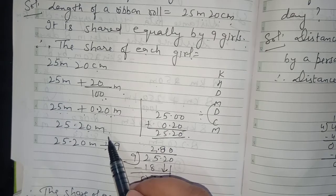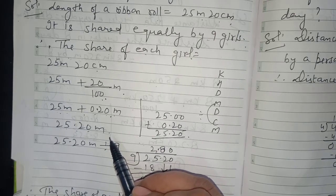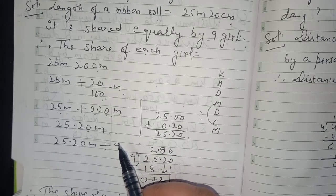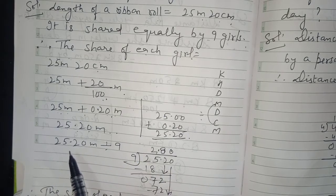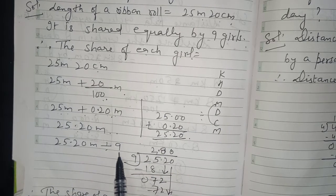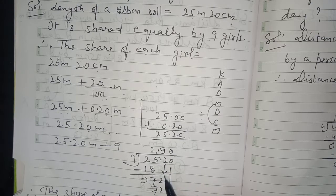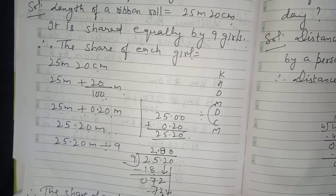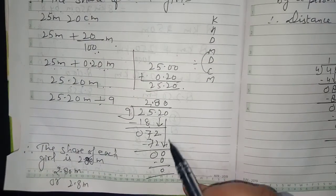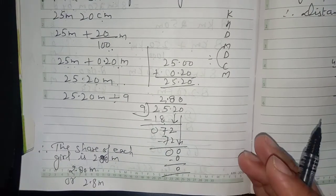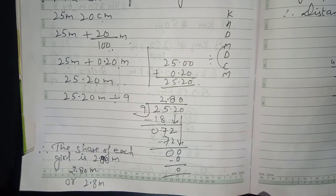We have converted 25 meter 20 centimeter into 25.20 meter. Now divide 25.20 meter by 9. Nine 2s are 18, 25 − 18 = 7; bring down 2; nine 8s are 72, 72 − 72 = 0; bring down 0; nine 0s are 0.